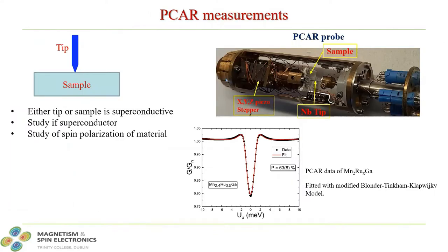Moving on, our in-house made point-contact Andreev reflection probe allows us to measure the differential conductance between normal metal and superconductor. This measurement is very useful to study the superconductivity and the spin polarization of the metals.